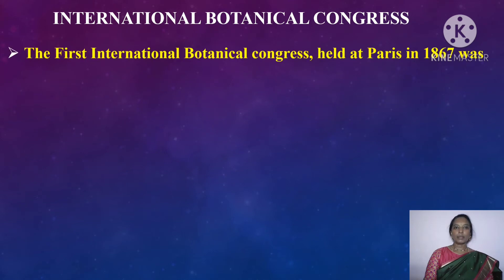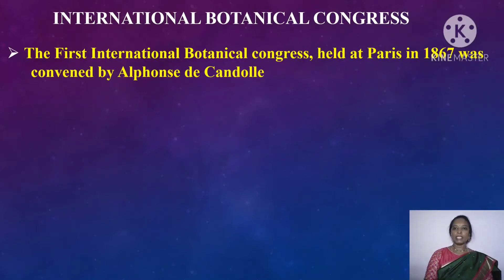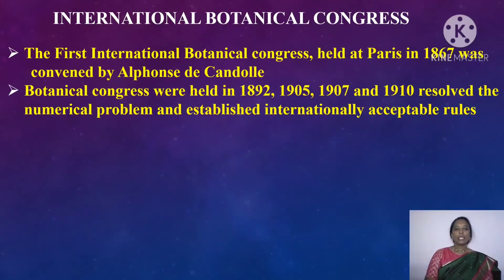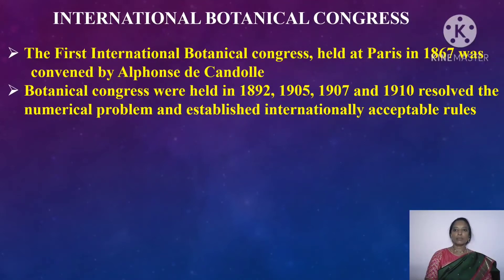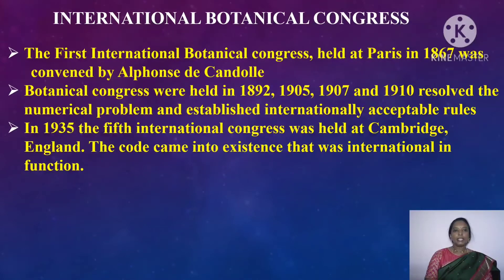International Botanical Congress. The first International Botanical Congress was held at Paris in 1867 and was convened by Alphonse de Candolle. It is also known as the Paris Code. Subsequent Botanical Congresses were held in 1892, 1905, 1907 and 1910, and resolved numerical problems and established internationally acceptable rules.